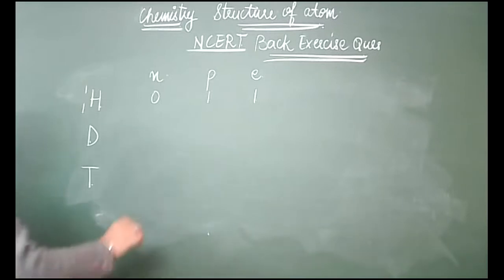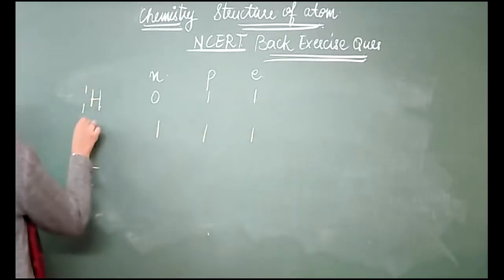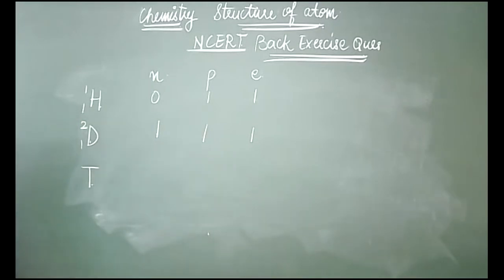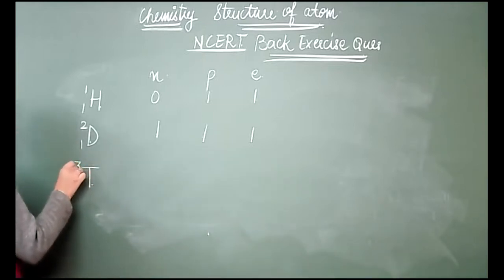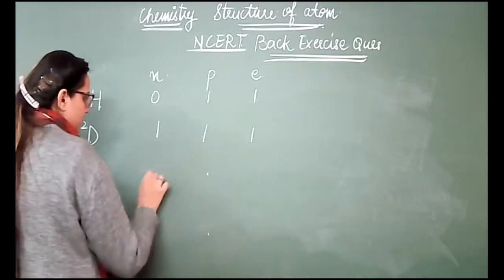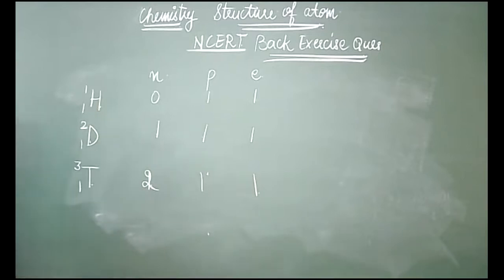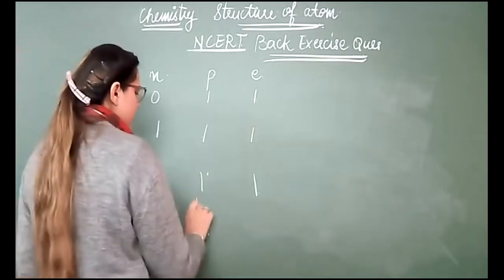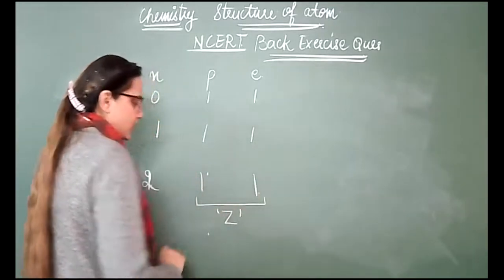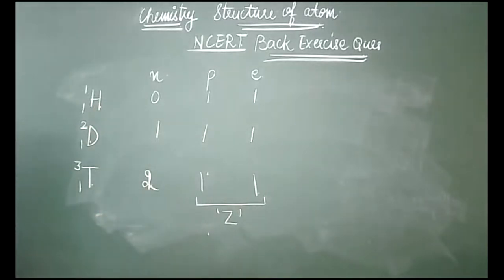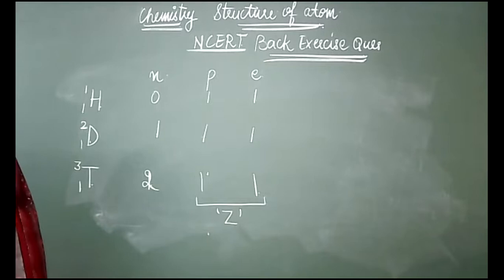For the electronic configuration of any one pair of isotopes: since all three hydrogen isotopes share the same atomic number of 1, their electronic configuration is the same — 1 electron in the K shell. For chlorine isotopes, chlorine-35 and chlorine-37 both have atomic number 17, so the electronic configuration is 2,8,7 for both. Electronic configuration depends only on the atomic number.